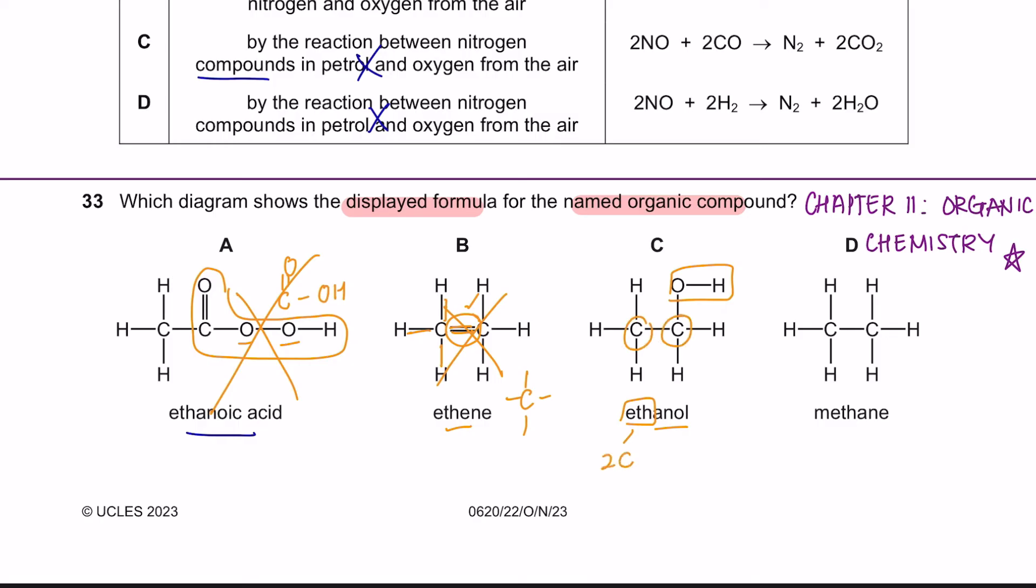Next, ethanol has a functional group of OH. Ethanol means this has 2 carbons. So yes, you have 2 carbons. Each carbon has 4 atoms of hydrogen. Also over here. So this is correct.